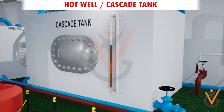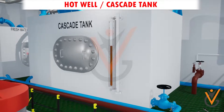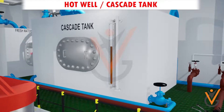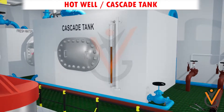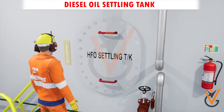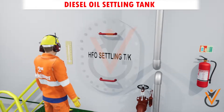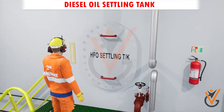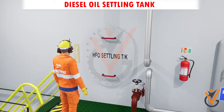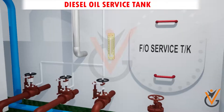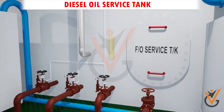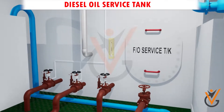The return from the steam heating system is also connected to the hot well. The heavy oil settling tank receives oil transferred from the bunker tank, where the first stage of separation takes place. The heavy oil service tank stores and supplies treated oil directly to the main engine, auxiliary engine, and boilers.